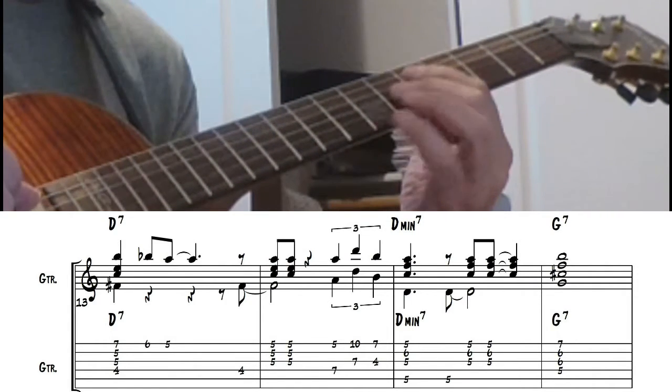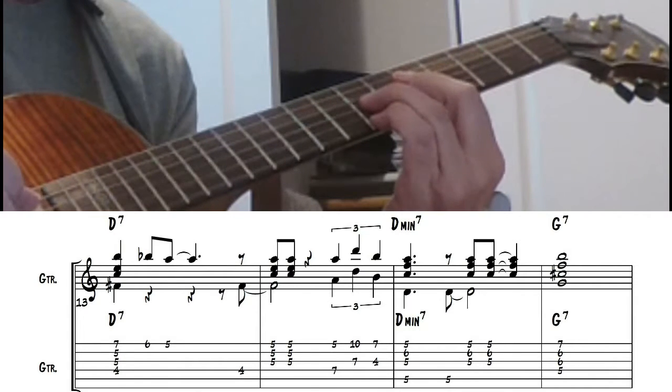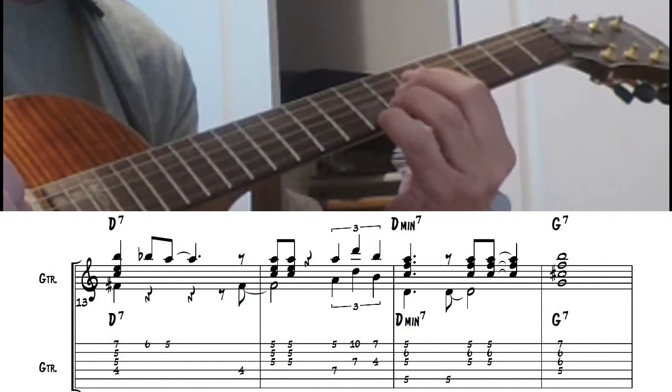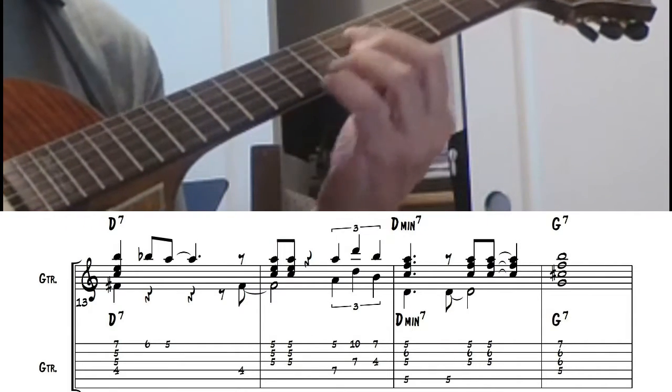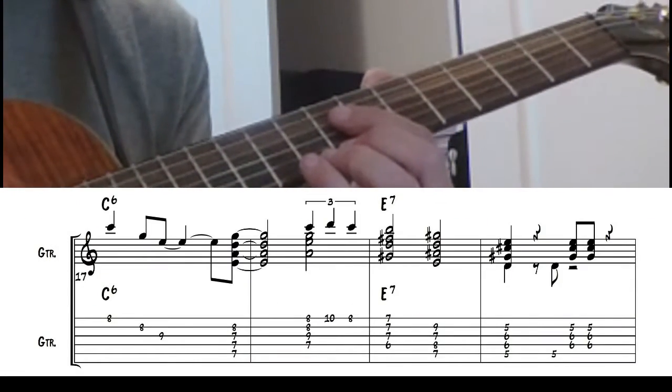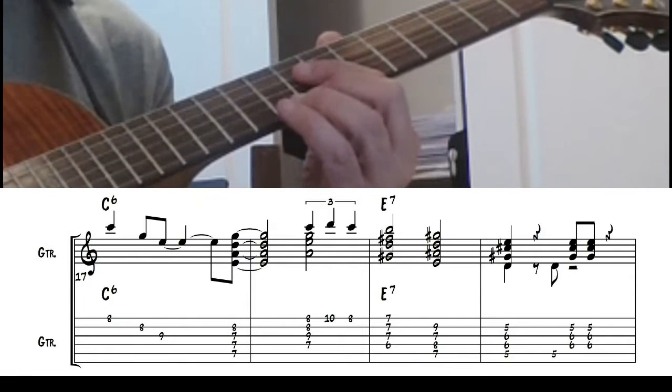And on that G7, I'm adding a little, so instead of just the regular G7, I'm adding the sharp 11 there. You might think of it as a flat 5th. The next 8 bars I play exactly the same as the first 8 bars.